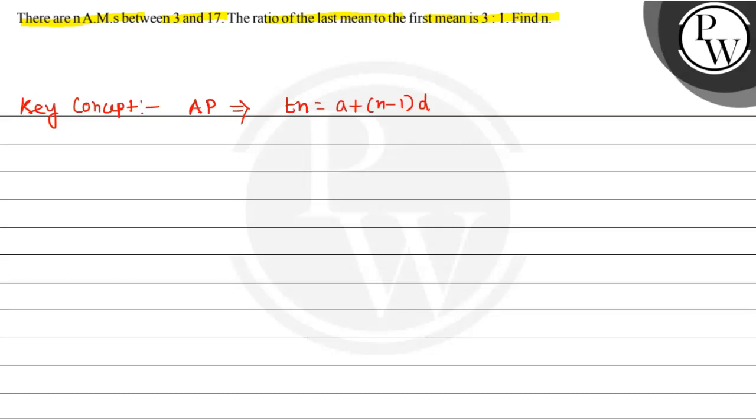So N AMs between 3 and 17. We have 3, A1, A2, A3, and so on up to AN, then 17. You can write the last term as 17.